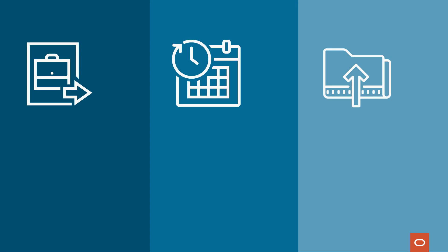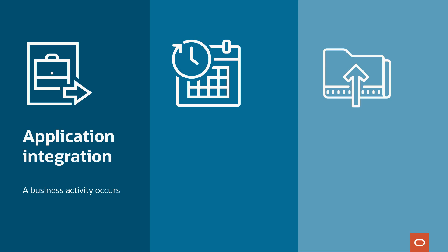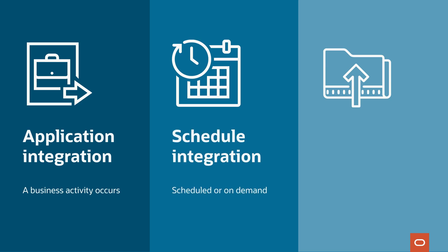You choose a pattern based on how you want the integration to start. An application integration starts when a business activity occurs. A schedule integration starts according to a schedule or runs on demand. And an event integration starts when an integration publishes a business event. Let's explore each pattern more closely.